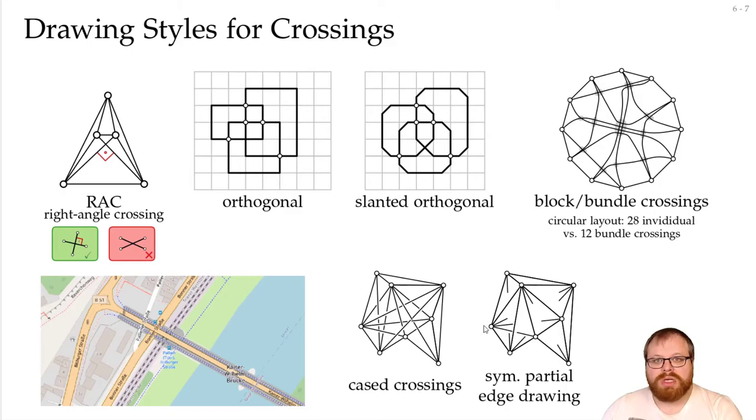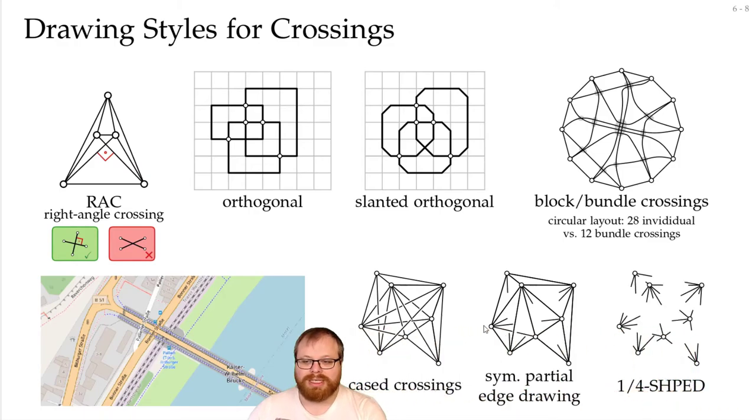And we can restrict this more, we can do symmetric homogeneous partial edge drawing, where the part that we remove is the same ratio for all of them. Then again, it makes it easier to find the target, but also it makes it harder on a first glance to see what is the structure of the graph.